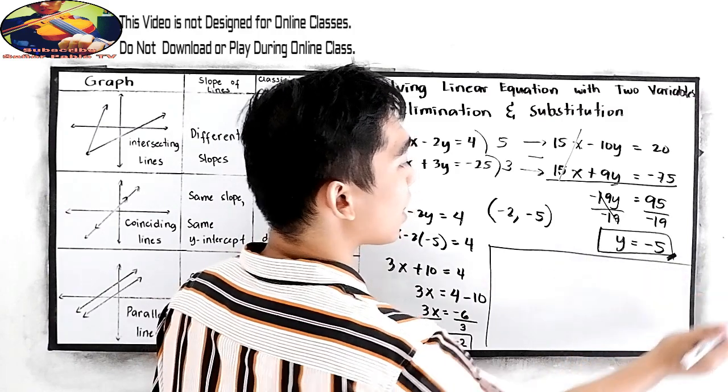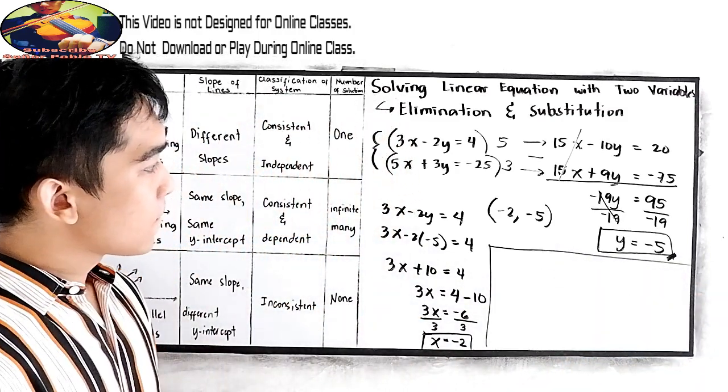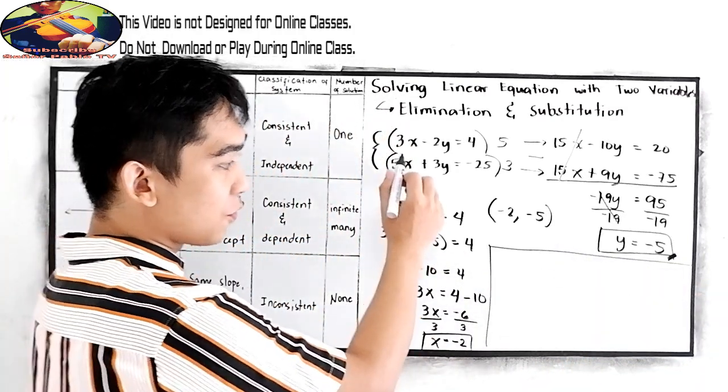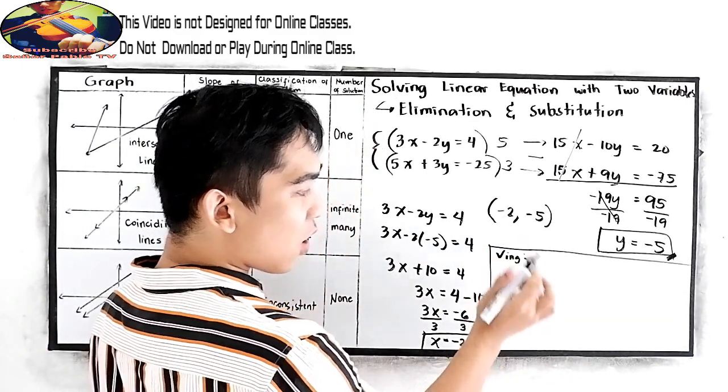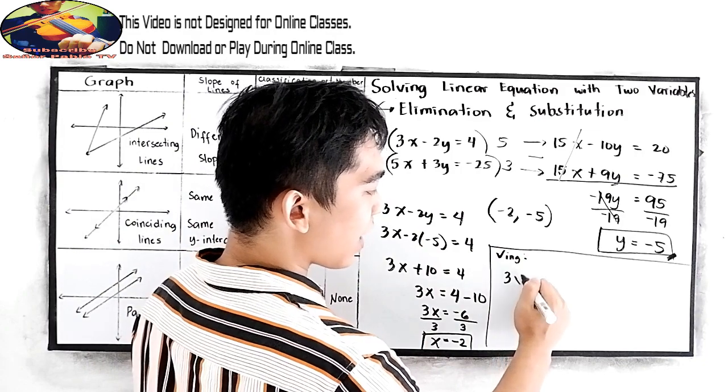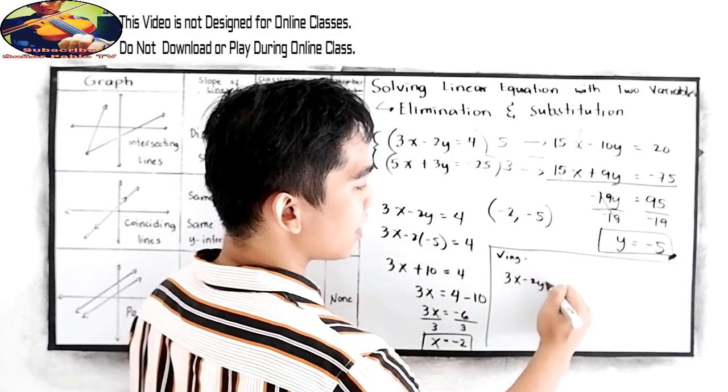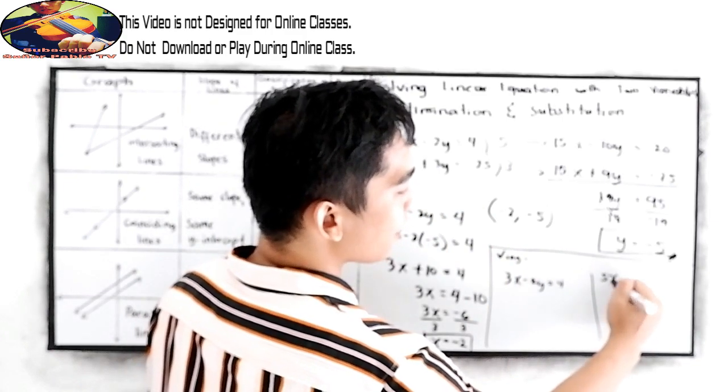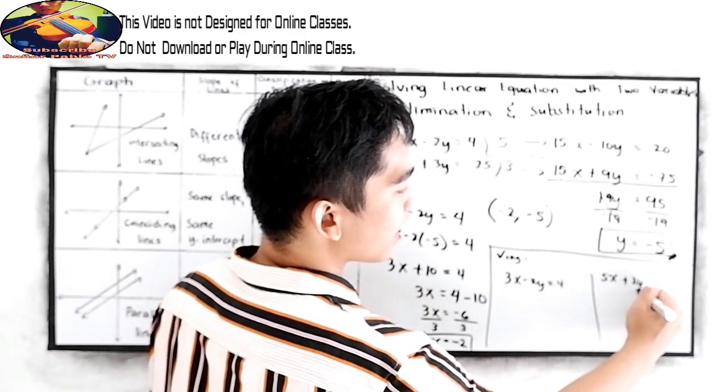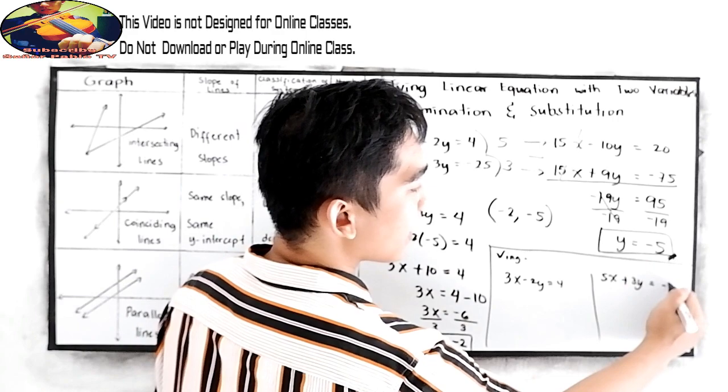And now, let us check our answer. For the checking, let's just substitute. So, 3x minus 2y is equal to 4. And the other one, 5x plus 3y is equal to negative 25.